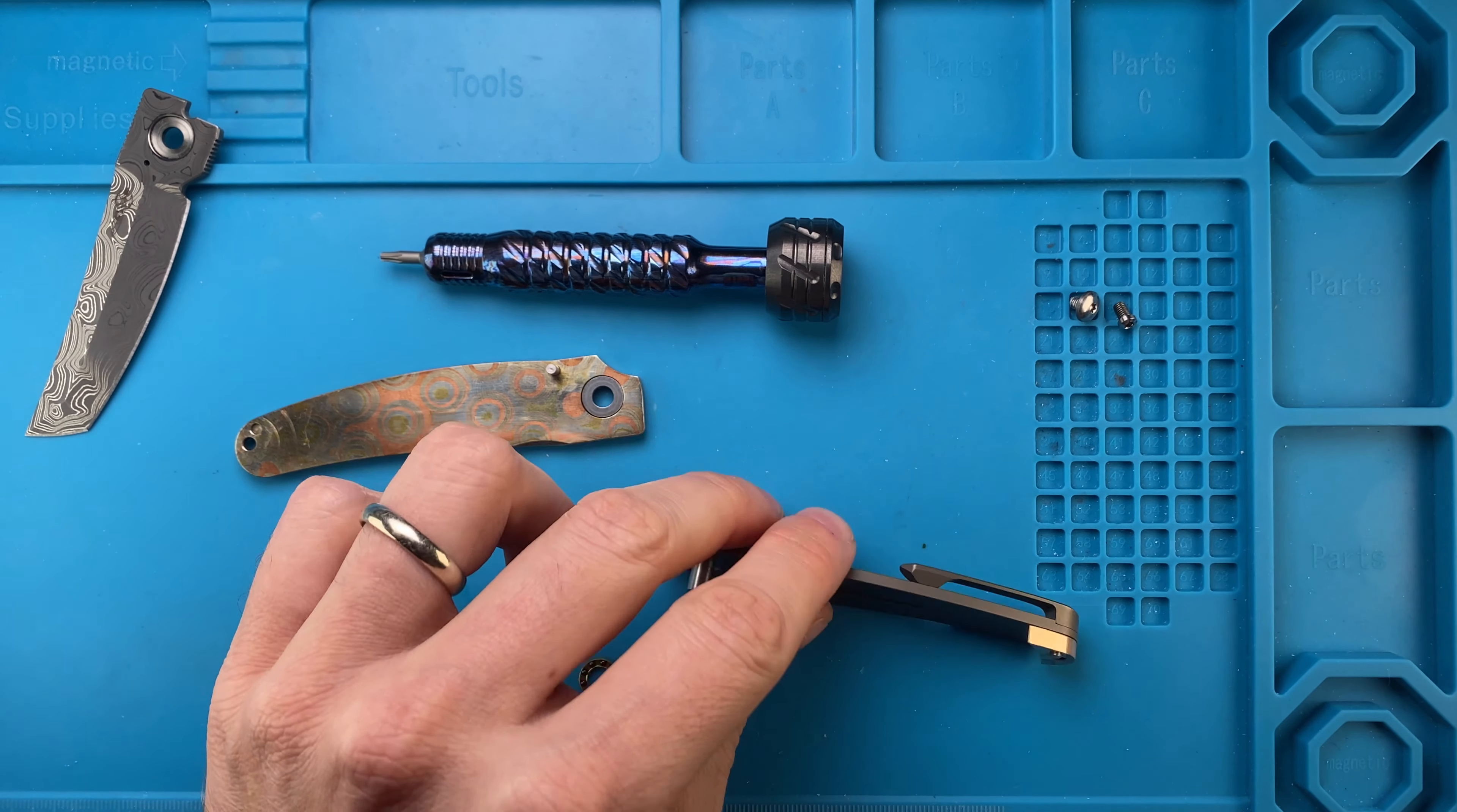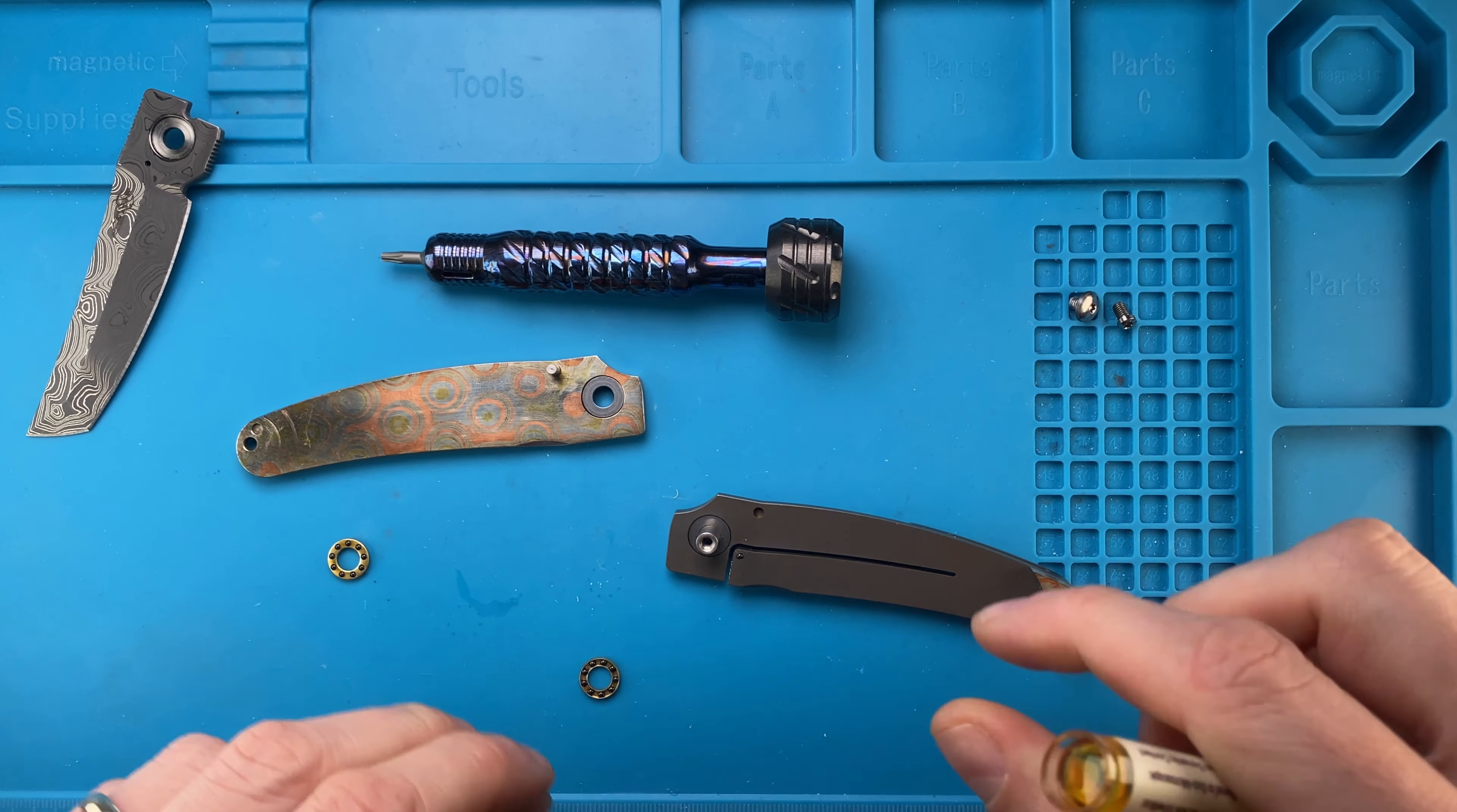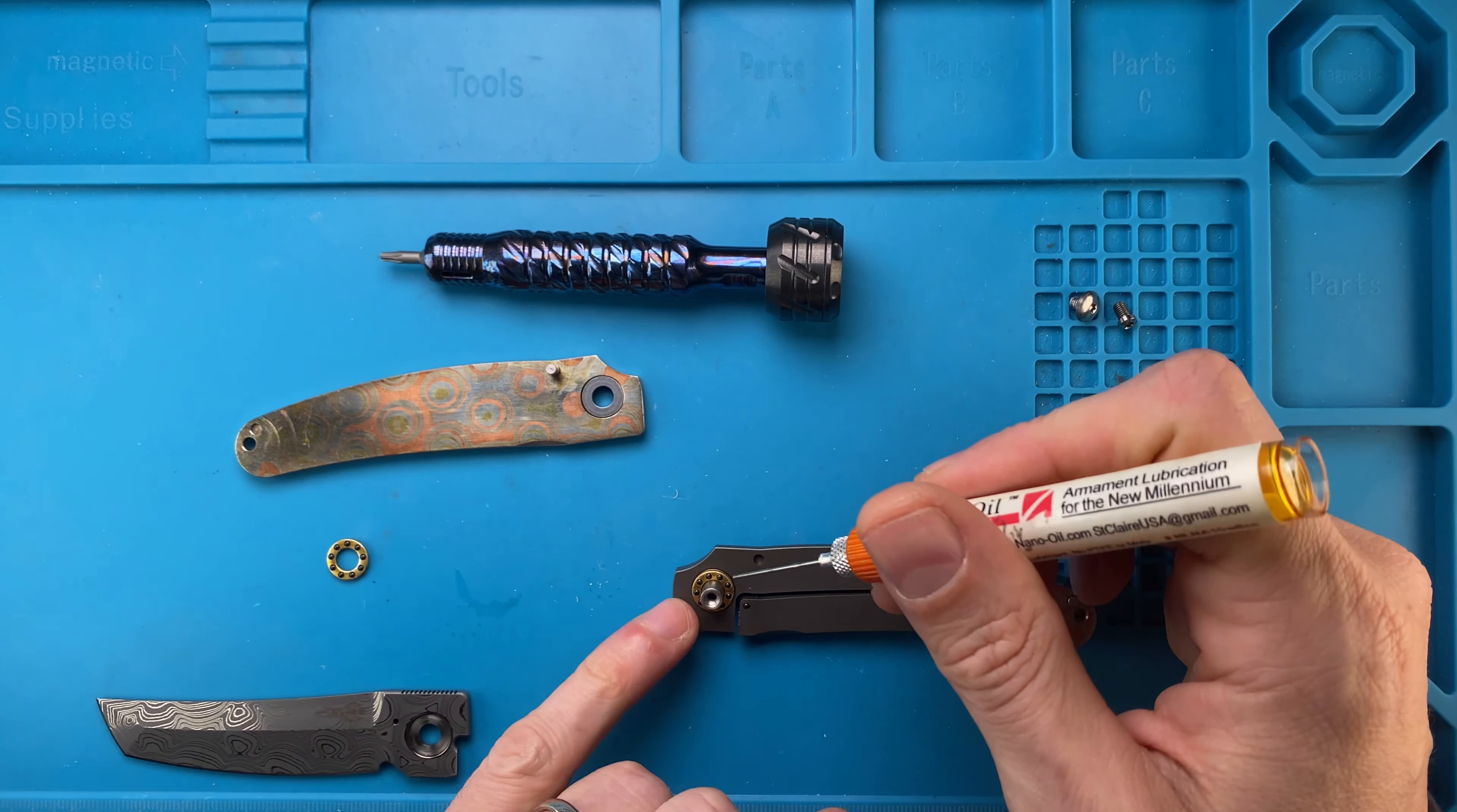All right, so that's basically done, guys. It's gonna be a quick one. I'm just using some 10-weight Nano Oil for these bearings over here, and blade can go actually back, like so.